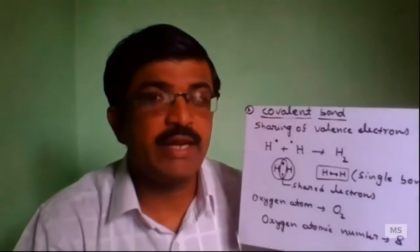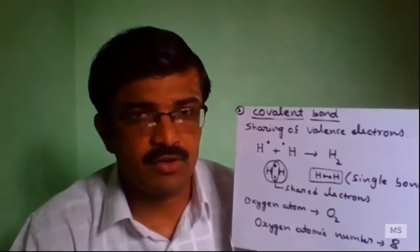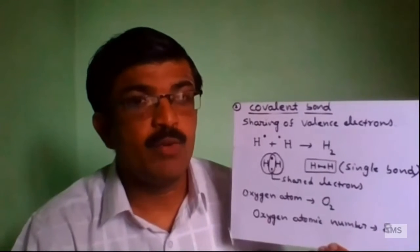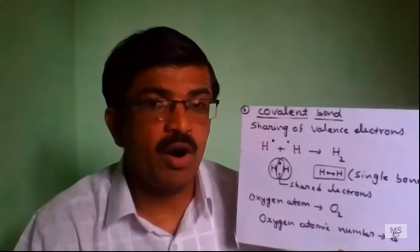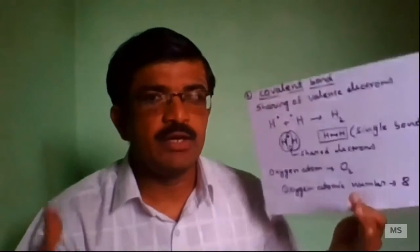Covalent bond - sharing of valence electrons. The bond forms when sharing of electrons takes place. One atom's electrons and another atom's outermost shell electrons are shared, forming a bond. That bond is called a covalent bond, also known as a valence bond.